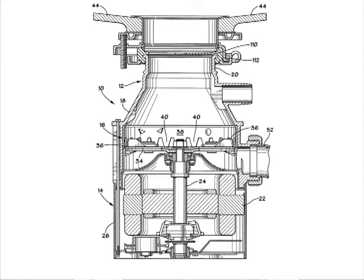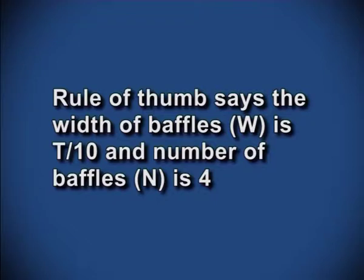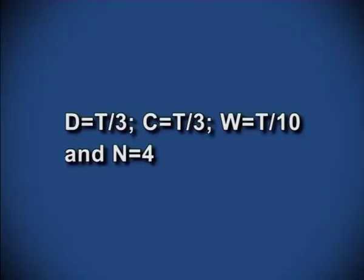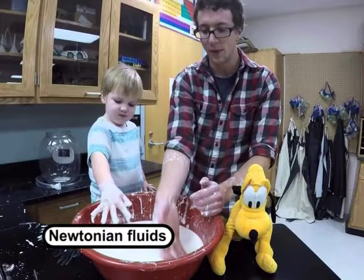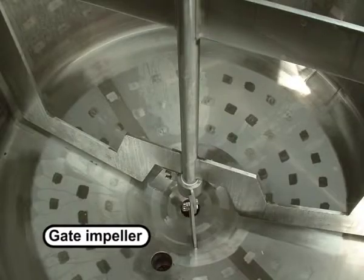Baffles are incorporated in the tank to reduce swirling action or vortex. Higher the number and width of baffles, higher is the impact but also higher is the power consumption. The rule of thumb says the width of the baffle W = T/10 and the number of baffles is 4. As a standard design: D = T/3, C = T/3, W = T/10, and N = 4. All these impellers work best for Newtonian fluids. For non-Newtonian fluids where viscosity is higher, impellers like helical ribbon, gate impeller, or anchor must be employed.